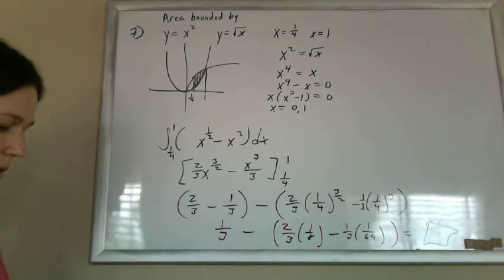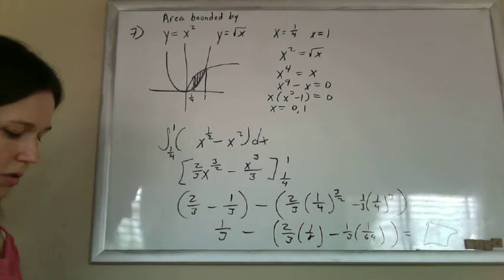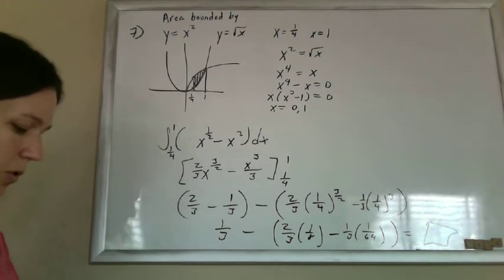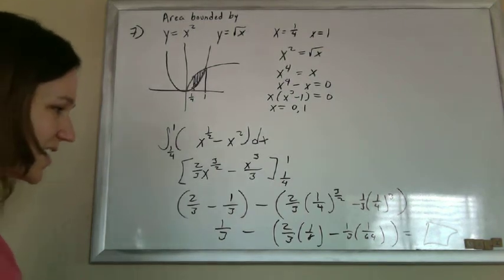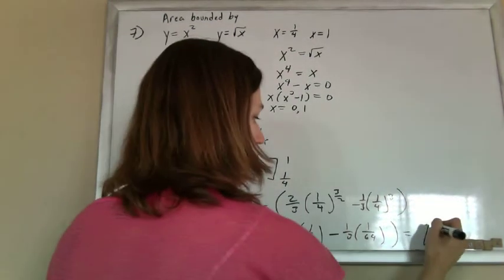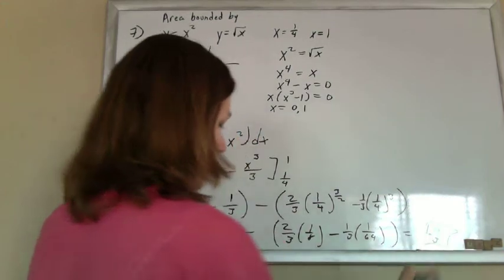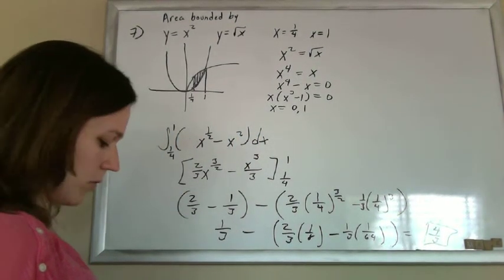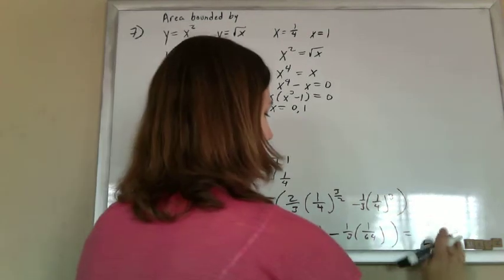If I look it up. This is section five point one, number seven. And the book tells me that once I do that whole mess, it's going to end up being four-thirds. No. Wrong one.